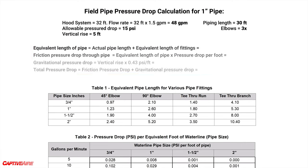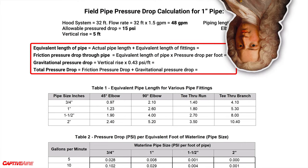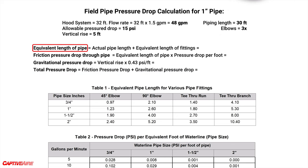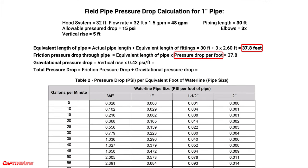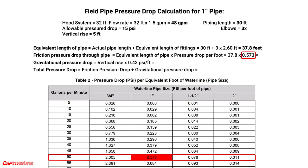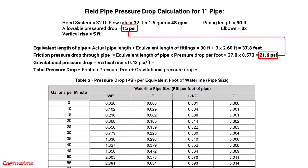Captivaire provides all the charts needed to calculate the pressure drop using simple math. First, we calculate the equivalent pipe length for the three elbows — each one is equivalent to 2.6 feet of pipe, so we have 30 feet of actual pipe plus the elbows, giving a total equivalent length of 37.8 feet. To find the friction pressure drop, we consult the chart for pressure drop per foot correlated to predicted flow. We had 48 gallons per minute, so we'll use the value at 50 to be safe: 0.573 psi per foot times 37.8 feet gives a friction pressure drop of 21.6 psi. This already exceeds our allowed 15 psi, so this pipe diameter isn't going to work.